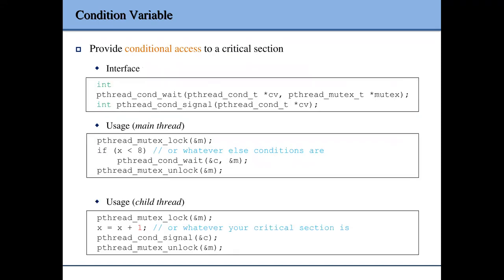The usage of the condition variable is that it provides conditional access to a critical section. It has two interfaces: the first is the wait function, which takes a condition variable and a mutex associated with it. The second function is signal, which signals that an event has happened to wake up all threads waiting on this condition variable.